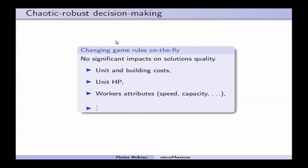And by change rules, I am thinking about all game attributes. So, it can be cost of units and buildings, hit points, or damage. It can be the speed of units, or the capacity of workers, that is the number of resources they are able to carry at the same time, and so on.